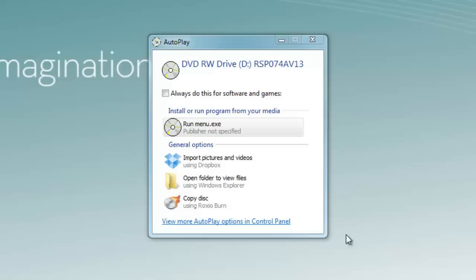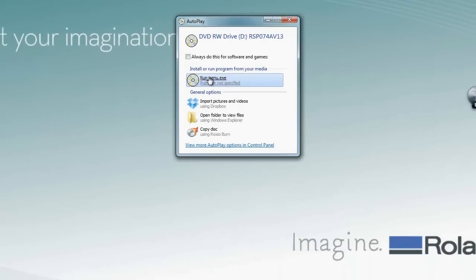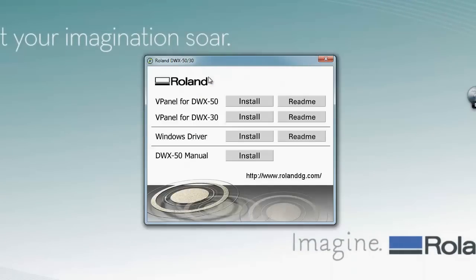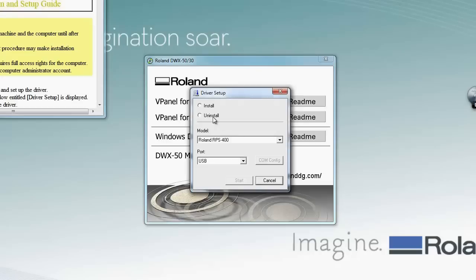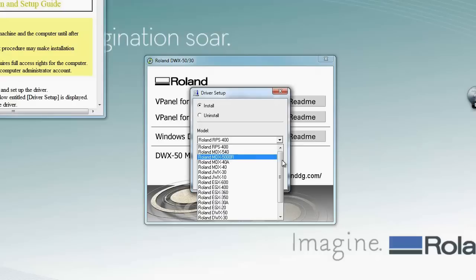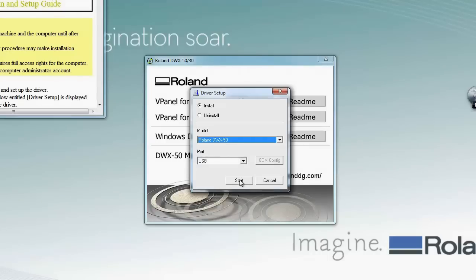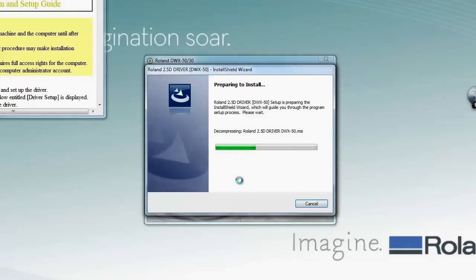Using the software CD that comes with your machine, run the software package and install your Windows driver first. Do this by clicking on the install button and clicking the install option on the driver setup. In the model, be sure you choose the DWX50 machine in the drop down and you will be connecting this through a USB port, so make sure your port is USB before you hit start to follow the wizard through the setup process.